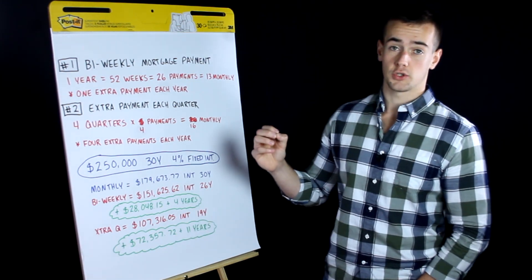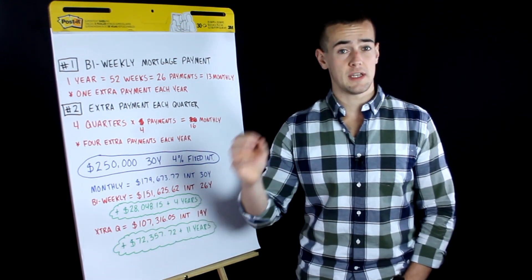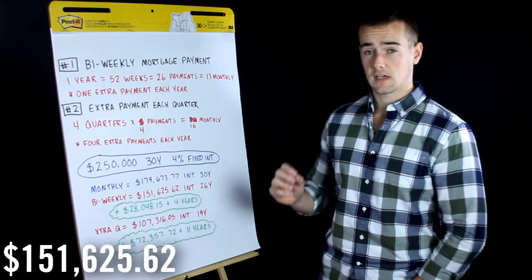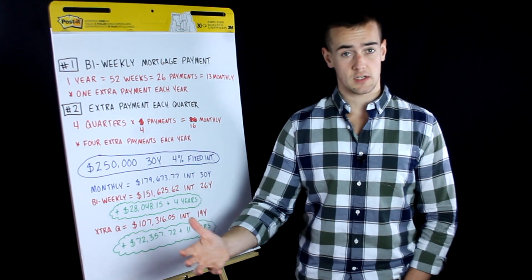Now if you follow the first strategy and you make bi-weekly mortgage payments, and you're making thirteen payments each year, you would be paying $151,625.62 in interest, and you would be paying off your mortgage in twenty-six years.